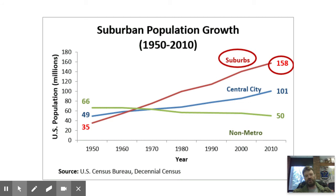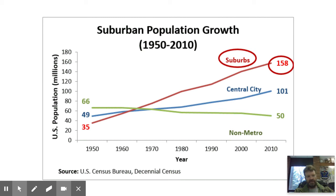Here's a chart showing suburban growth: in 1950 there were 35 million people living in suburbs. By 2010–2015, that number had quadrupled to 158 million. The central city population went up too, but not nearly as much — the suburban growth is out of control.